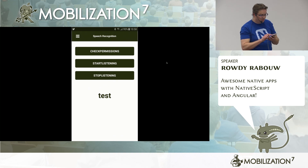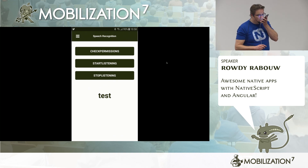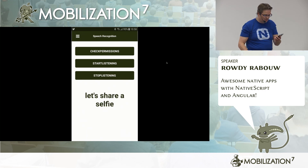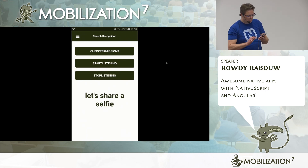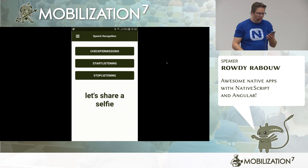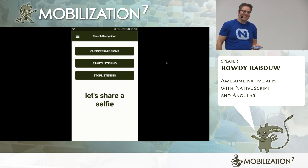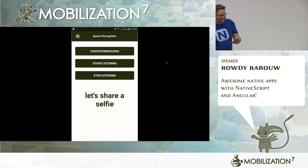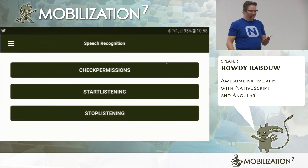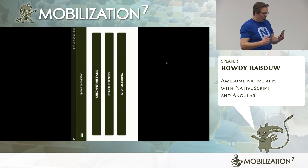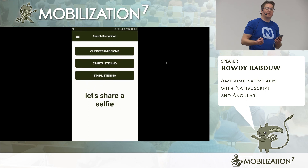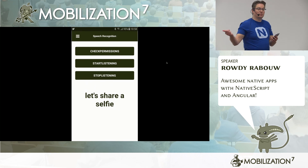You can also say 'let's share a selfie' — it should open the camera. You could take a selfie and use the Social Share plugin to post it on Twitter. That was the goal, but live demos don't always cooperate.